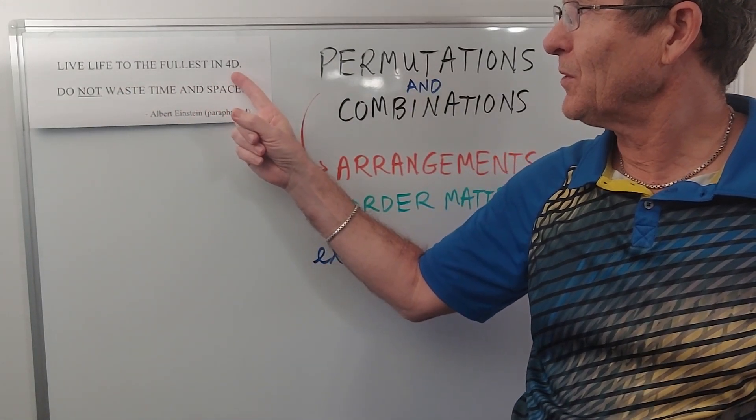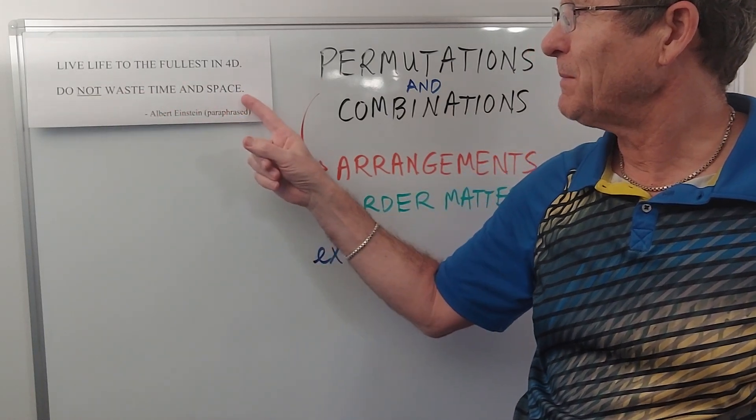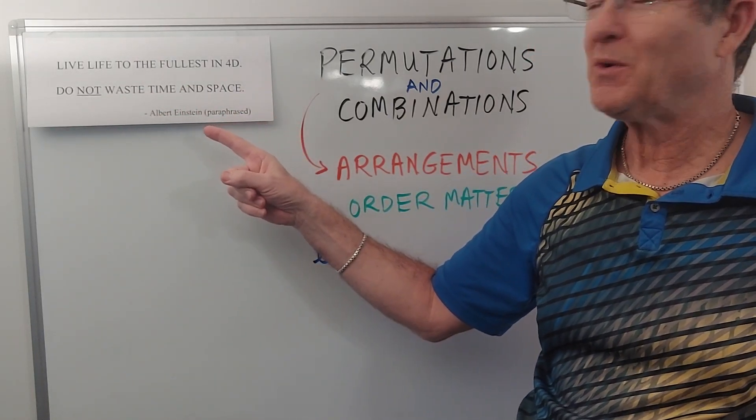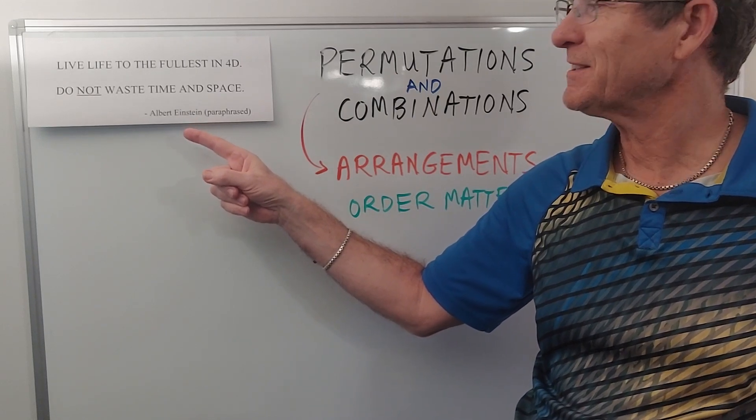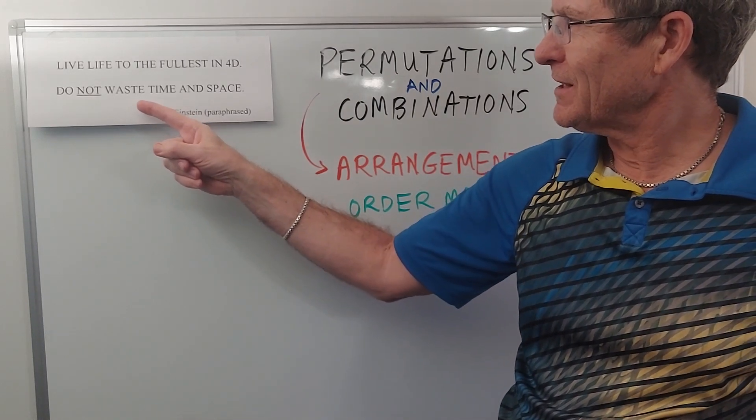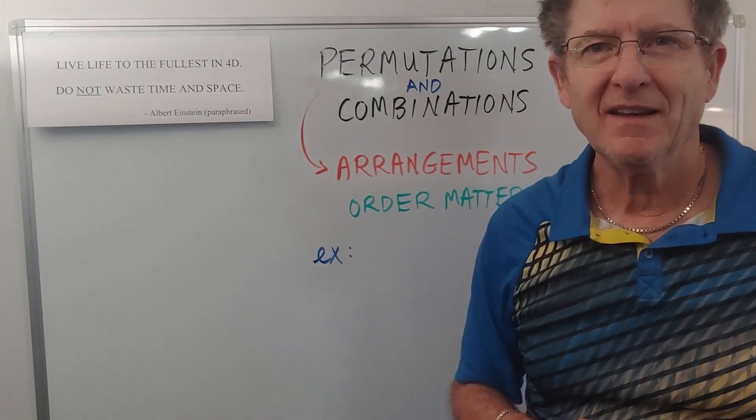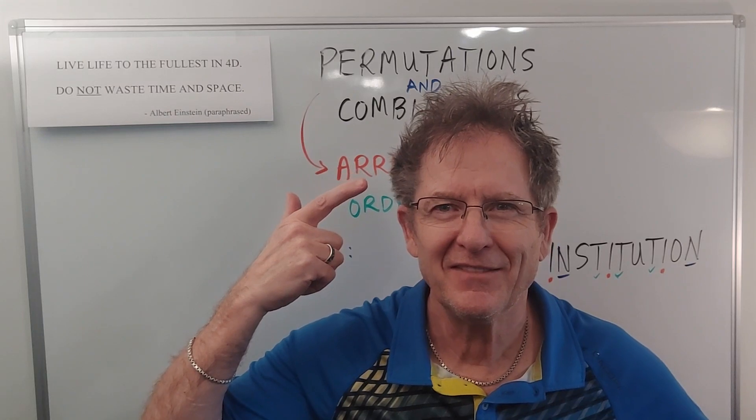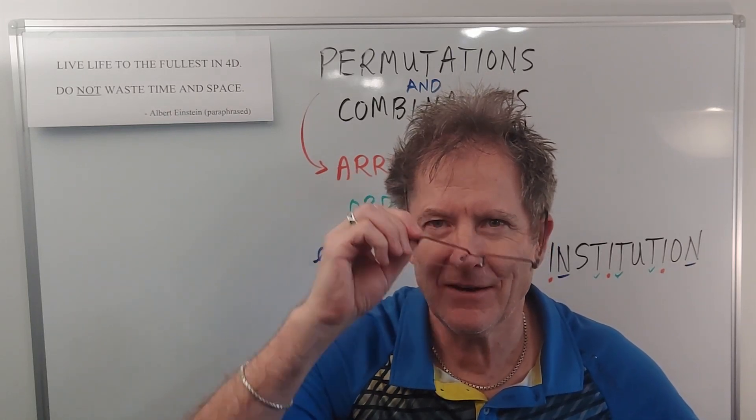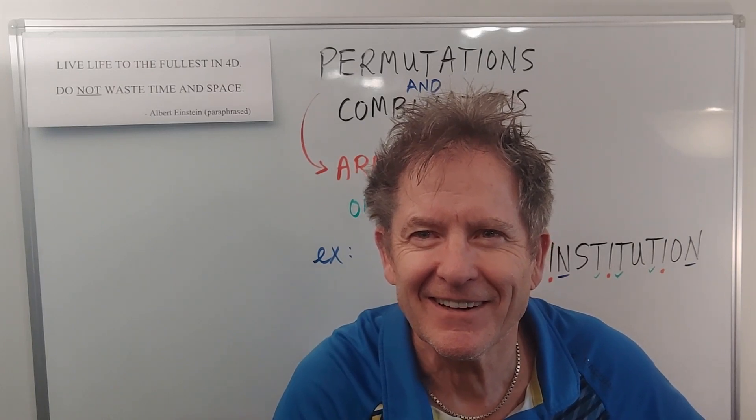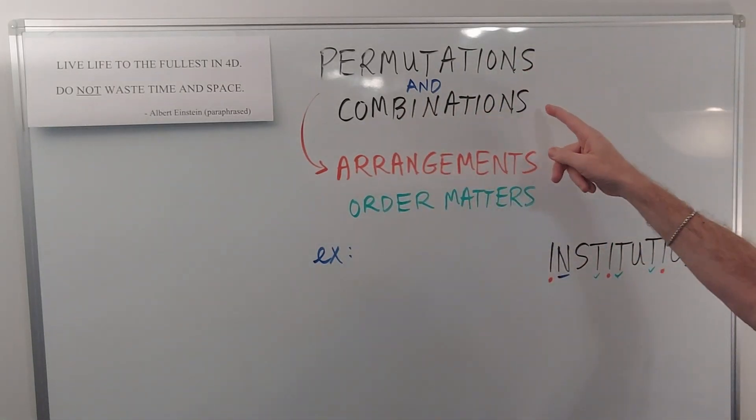But first, another famous sign in my classroom: live life to the fullest in four dimensions, 4D, do not waste time and space. I attributed that quote to Albert Einstein, one of my favorite scientists, because he often talked about time and space in his theories of relativity, and hence the hair. If you see the resemblance? No, not quite. Okay, how about now? There you go.